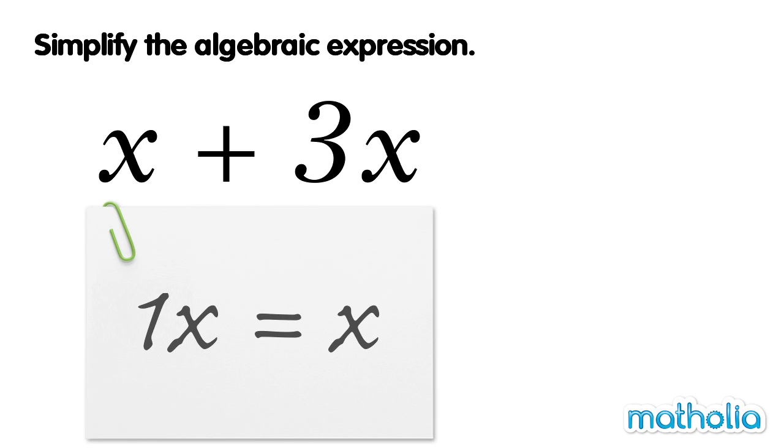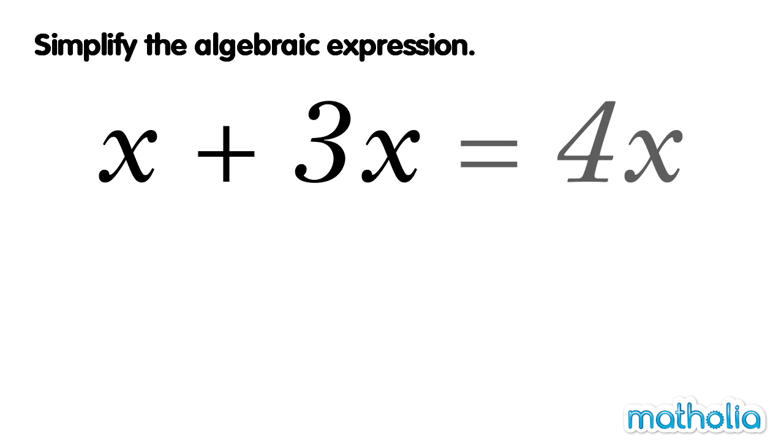So to simplify the expression, we add 1x and 3x. 1x plus 3x equals 4x. We have simplified the expression.